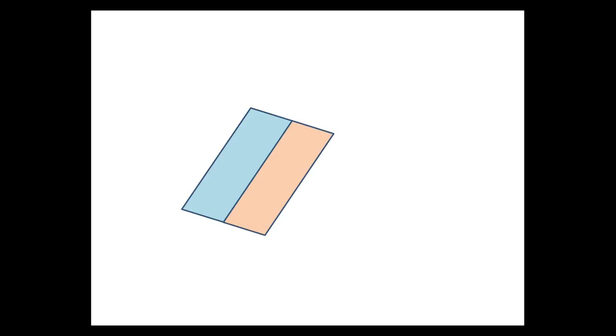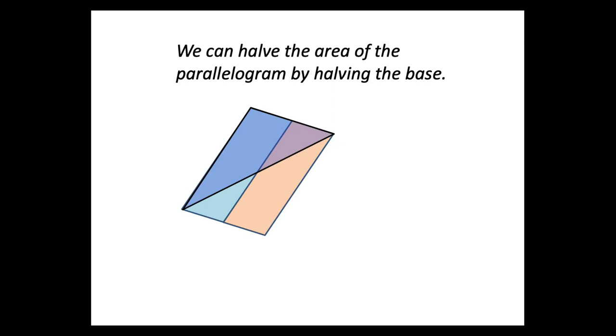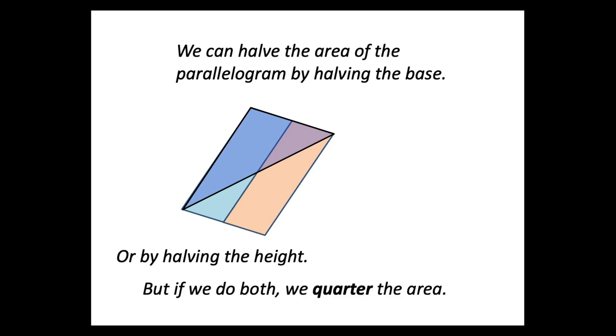But we can think about that in other ways. We can think about the triangle and we can think about halving just the base and keeping the height the same. That's going to halve the area. We could think about just halving the height, and that's going to halve the area as well. But if we do both—half the base and half the height—we're going to quarter the area. So maybe there are some ways of thinking visually that are helpful here.